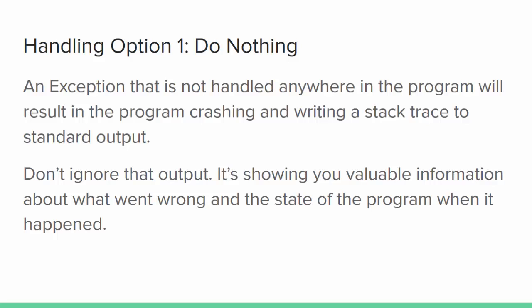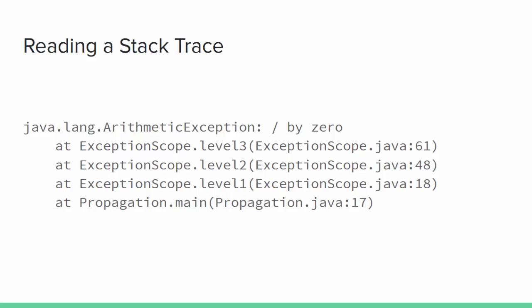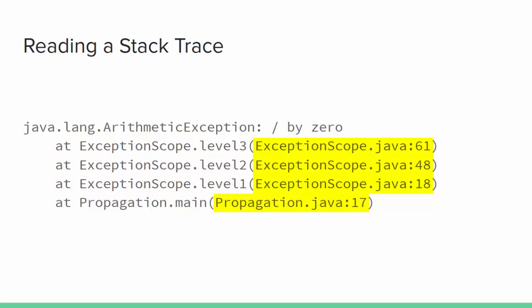For most runtime exceptions, doing nothing ends up being the best choice. It's very important to talk about the value of the stack trace output — this is valuable information for debugging and figuring out what went wrong. It includes the type of the thrown exception, any message that was passed into the exception's constructor, which possibly has important details about why the exception was thrown, and it has the call stack, which shows the line number for the current statement in every method that was active when the exception occurred. This is valuable information for debugging, so don't ignore it — use it.